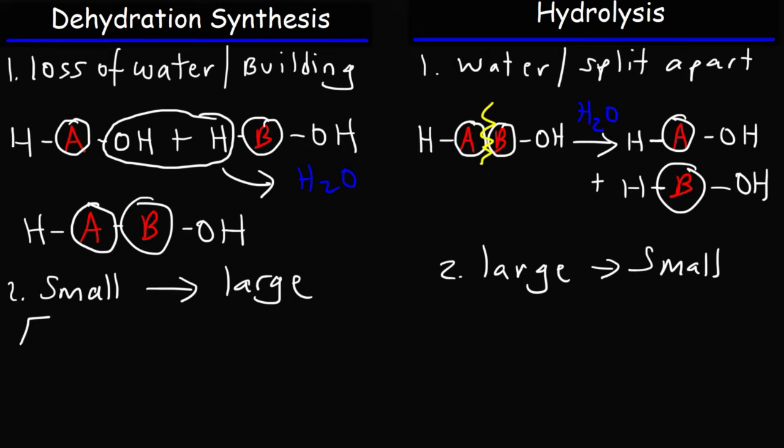So another example would be combining glucose and fructose, two monosaccharides, and turn it into a larger molecule called sucrose, which is a disaccharide. So that's an example of a dehydration synthesis reaction.